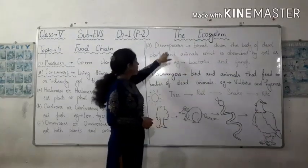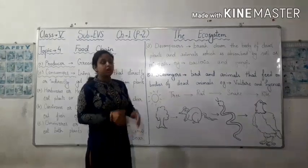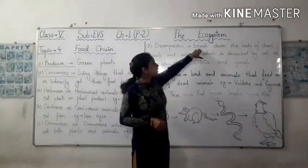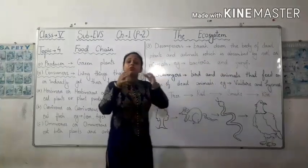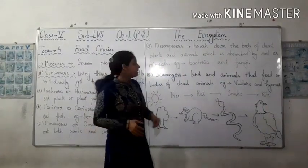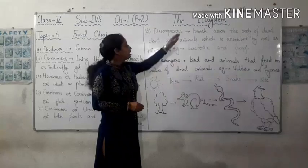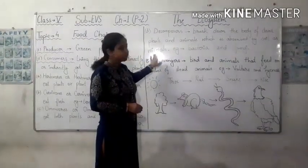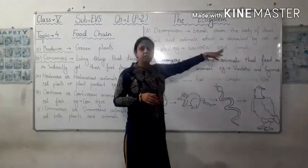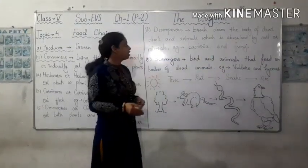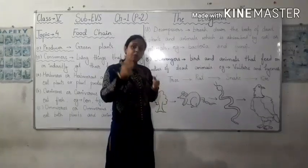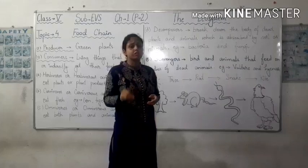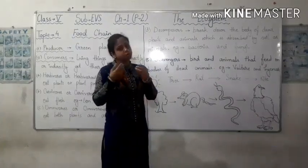Here we can see we have decomposers. Decomposers are responsible for breaking down the bodies of dead plants and animals, and that matter is absorbed by the soil as minerals. Examples are bacteria and fungi. Bacteria and fungi break down the bodies of dead animals and plants into minerals, and those minerals are taken up by plants.